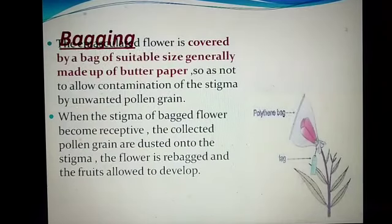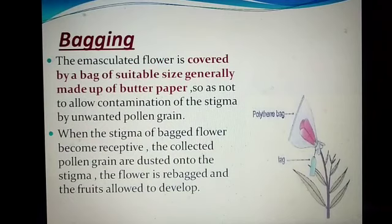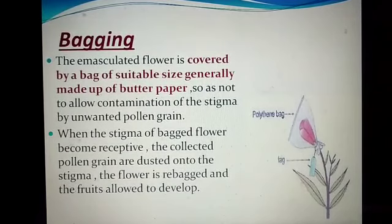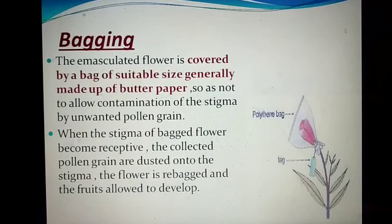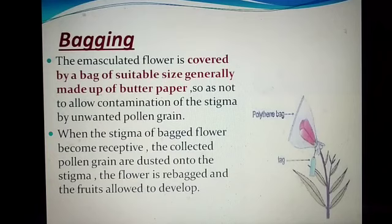The second step is bagging. The emasculated flower is covered by a bag of suitable size, generally made of butter paper, so as not to allow contamination of the stigma by unwanted pollen. When the stigma of the bagged flower becomes receptive and the female part develops, the collected pollen is dusted onto the stigma, the flower is re-bagged, and the fruit is allowed to develop.